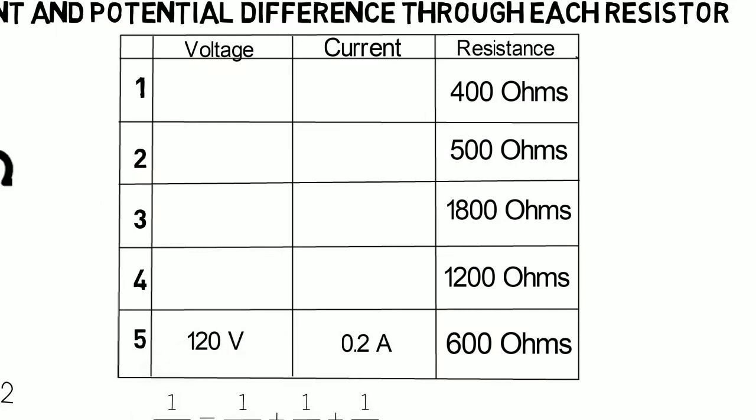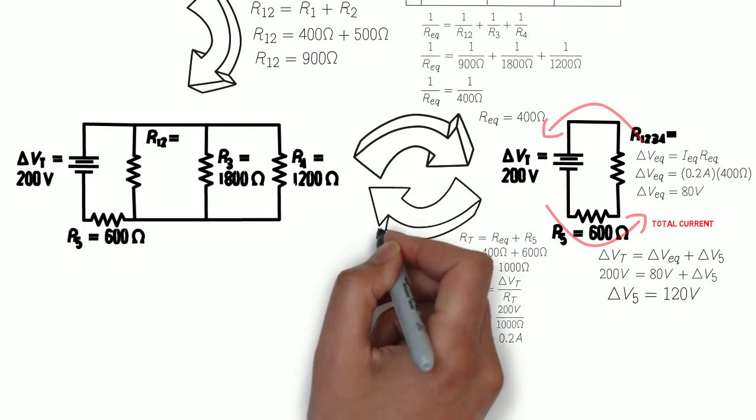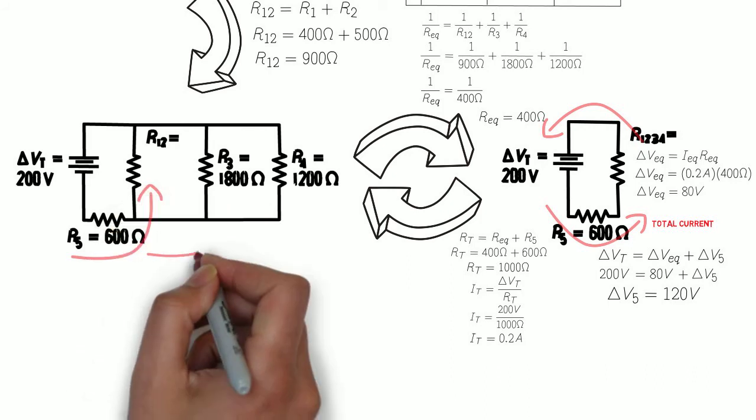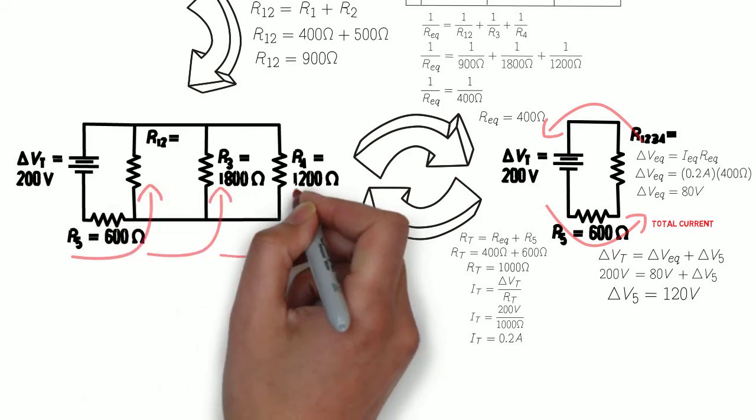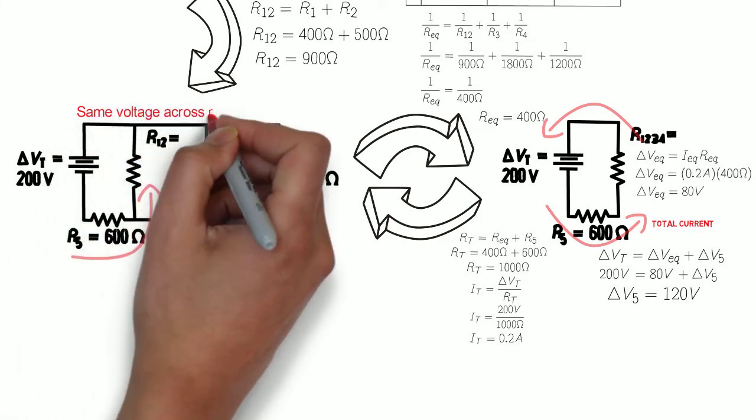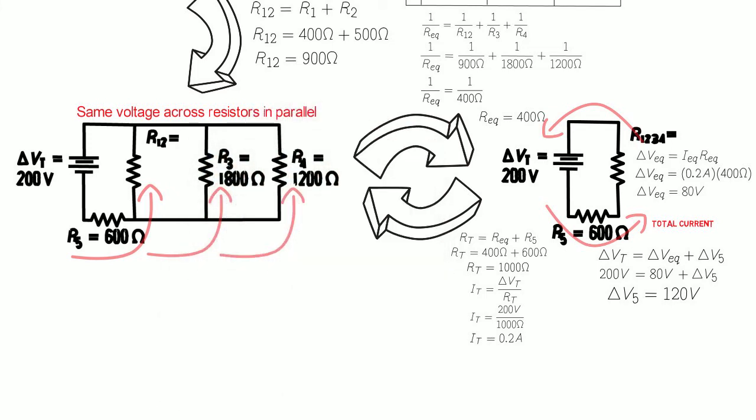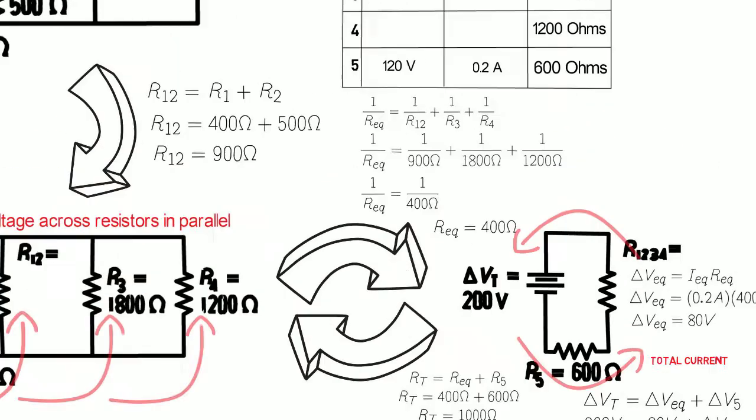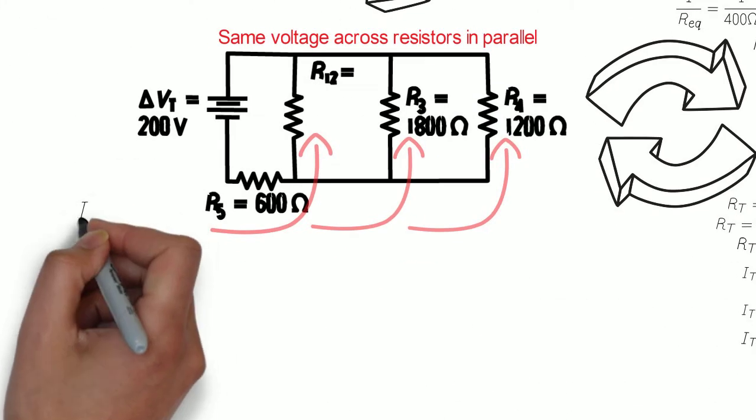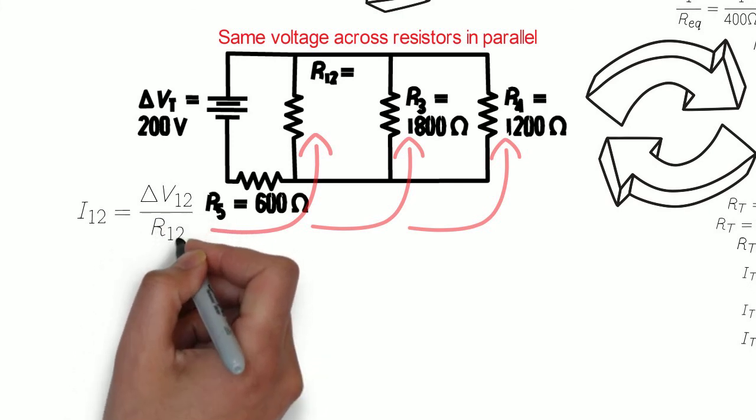Now we can record the information onto our chart and go back to a little bit more complicated circuit where we're going to split R1234 back into R12, R3, and R4. And we do that by realizing that the potential difference through resistors in parallel is all the same. And since we know the potential difference through R1234 to be 80 volts, we know that the potential difference through R12 is 80 volts, through R3 is 80 volts, and through R4 is 80 volts. And then we can use Ohm's law for each to calculate the current through each of those resistors.